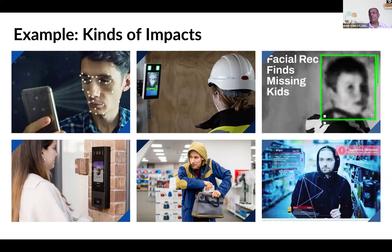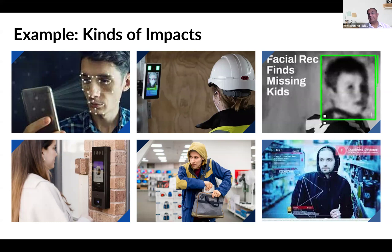To understand this better with an example, here I have different use cases of facial recognition. They carry different risks, and all have certain benefits, but also different kinds of impacts on people and societies. The first is something we use all the time — unlocking our phone using its camera. There's obvious convenience: you don't have to key in a code, so when you're driving you can easily open your phone. On the downside, there are risks of your identity being hacked if someone gets your biometric identifiers. There's also a privacy risk that data could be leaked and used for other purposes. In this case, the impact is primarily to the individual.